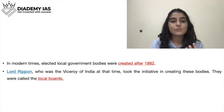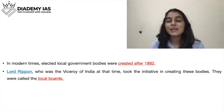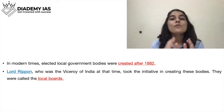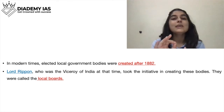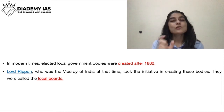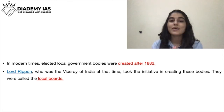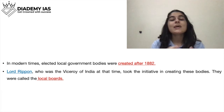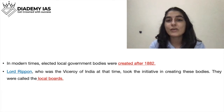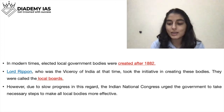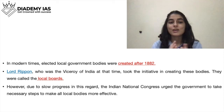After 1882, our Viceroy was Lord Ripon — please remember this name. He is also called the Father of Indian Local Self-Government, and a direct question is often asked: who is the father of local self-governments in India? The answer is Lord Ripon. He gave great attention to implementing local government, understood that local governments were working very effectively, and implemented these concepts. That is why we call him the father of local self-governments in India.